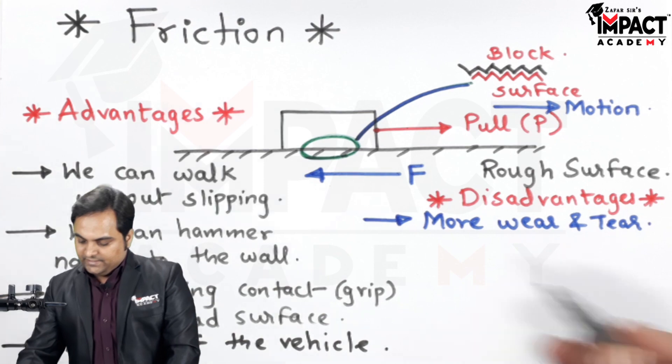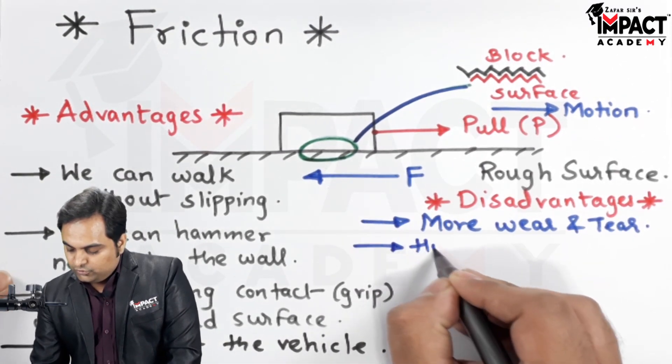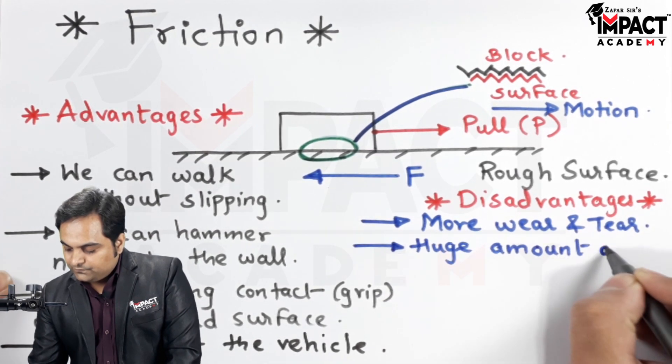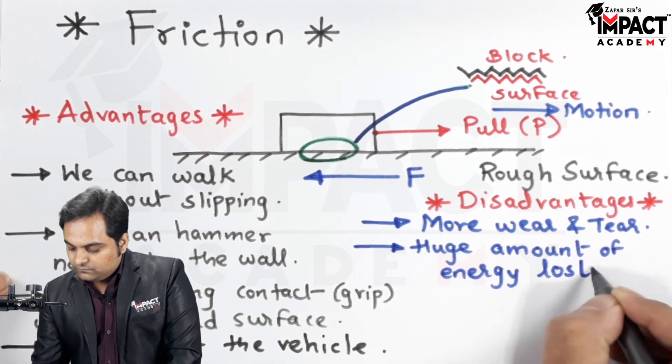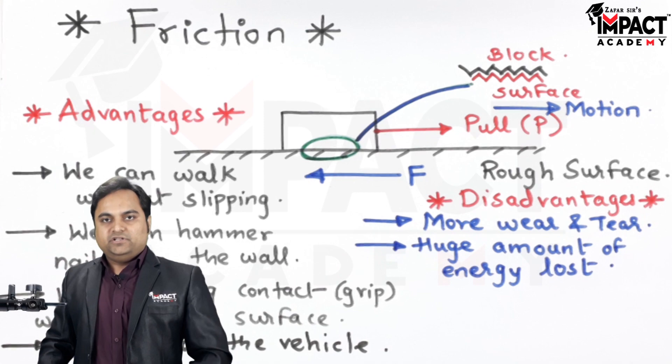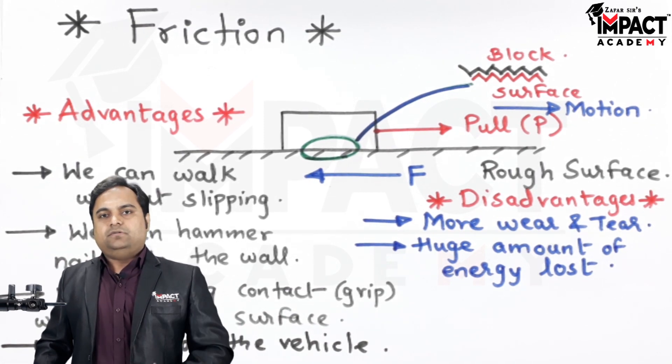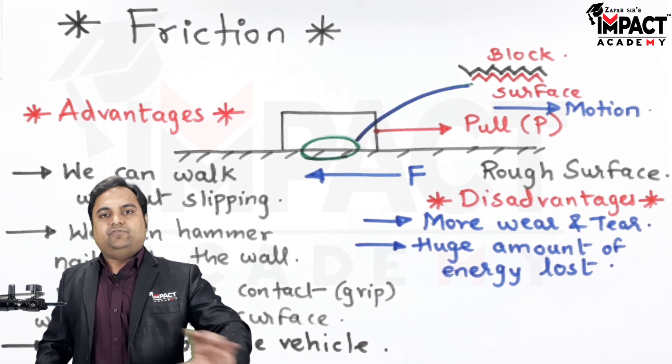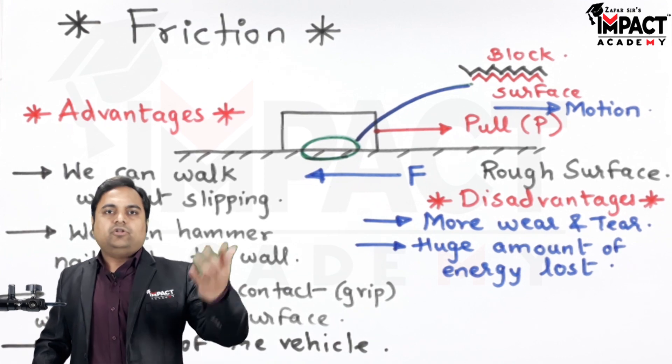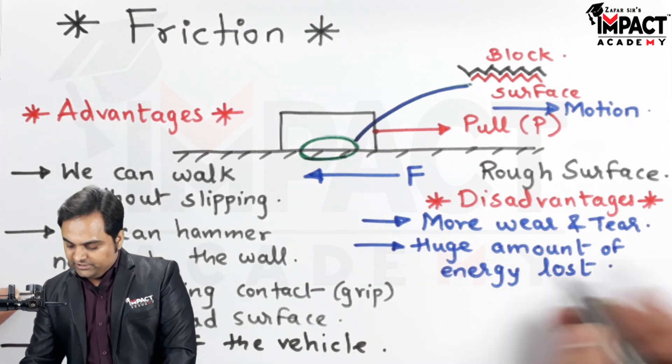Due to friction there is huge amount of energy lost. More energy would be spent in overcoming the friction. This friction is even encountered by the fluids as well when they are flowing into a pipeline. The wall of the pipeline or the boundary of the pipeline offers friction so there is huge amount of power lost or energy loss.